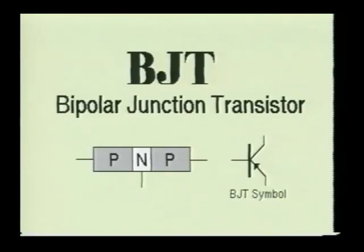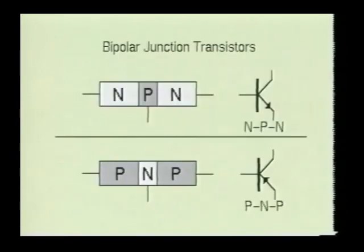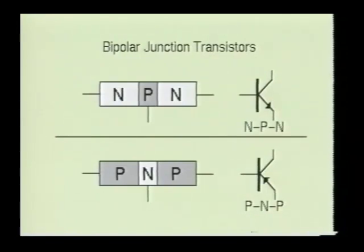Here we see a bipolar junction transistor, or BJT for short. This transistor is a three-layer device. Depending on how the semiconductor materials were formed, the bipolar junction transistor may be either an NPN or a PNP-type device.